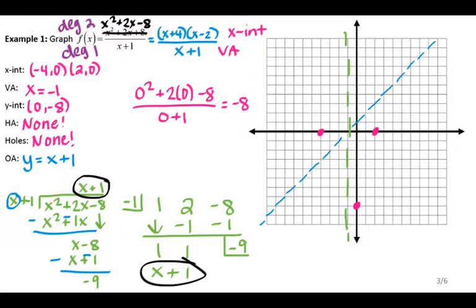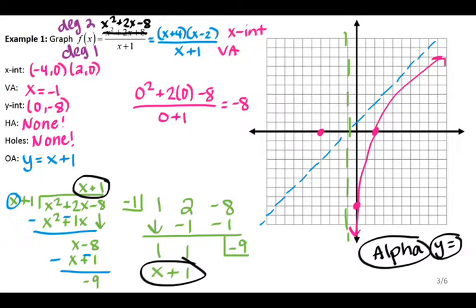Now to actually sketch the graph, you can use the calculator, so type in your original function. Don't forget about alpha y equals. That will help you create that fraction bar. If you look at the graph on your calculator, it should look something like this. Your graphs do look a little different today, because we now have slant asymptotes, or oblique asymptotes instead of horizontal asymptotes.